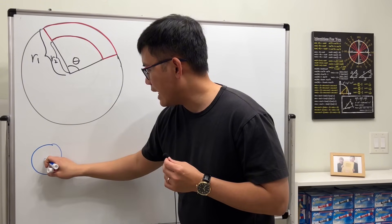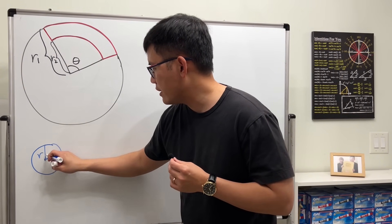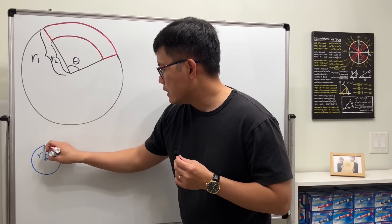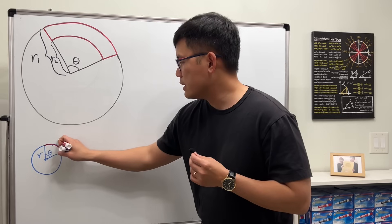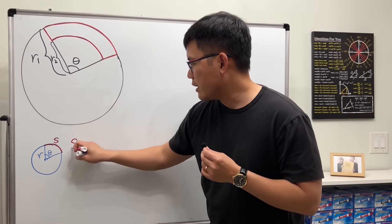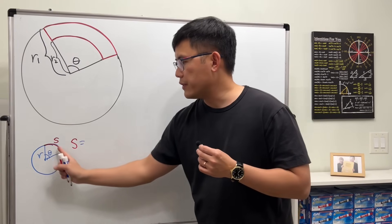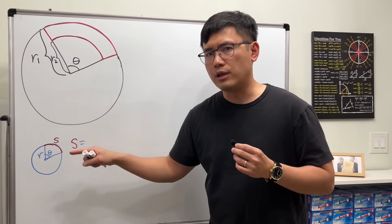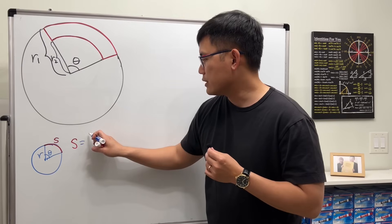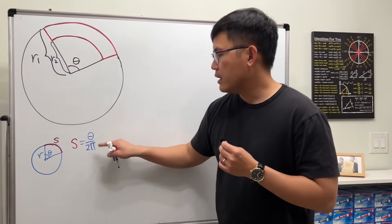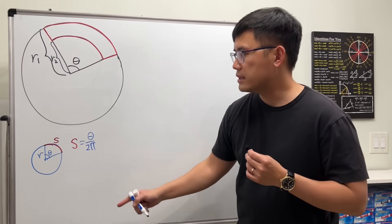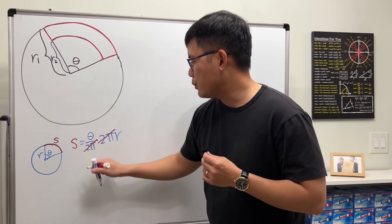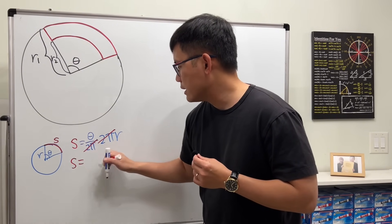Let me do a quick review. When we have a circle with a radius and an angle, we need to know two things. The first is how long the arc is — I'll call it s. Arc length s is just a portion of the circumference: theta over 2π times 2πr, so the 2π cancels and s equals r times theta.